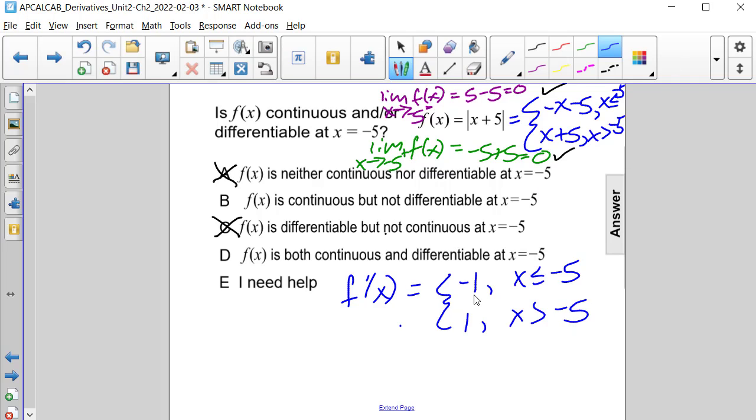And we can see that the slope of our tangent lines, or the limit of f prime of x as x approaches negative 5 from both the left and right, are not equal to one another. Therefore, it is not differentiable.